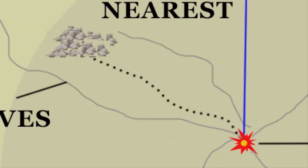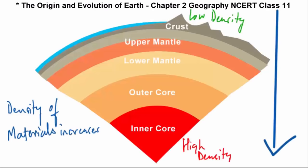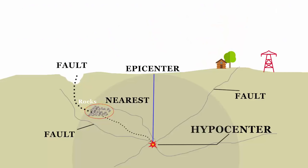When these body waves move towards the surface, they come in contact with the surface rocks and generate a new set of waves. These are called surface waves. The velocity of waves changes as they travel through materials with different densities, and materials with higher density reside deeper down. Therefore, the denser the material, the higher is the velocity. Their direction also changes as they reflect or refract when coming across materials with different densities.